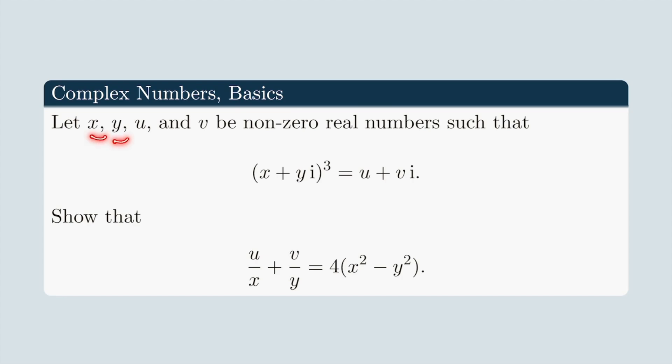Let us read the problem together first. Let x, y, u, and v be non-zero real numbers such that (x + yi)³ = u + vi. Show that u/x + v/y = 4(x² - y²).